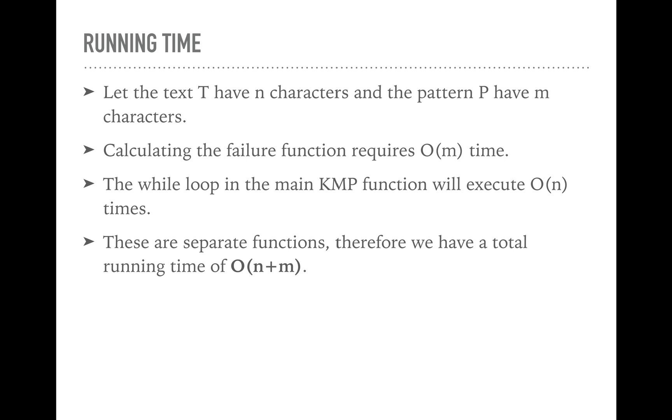The while loop in the main Knuth-Morris-Pratt function, that's our main function is doing the matching and the comparing. That'll execute in order n time. And you can see, if you go back in the code, that'll be clear. So these are two separate functions, calculated them separately. Therefore, the total running time is order n plus m. That's really good. It's way better than brute force. And this worst case is actually optimal because we're just iterating through the whole pattern and the whole text once, can't get any better than that. That's the best you can do. And that's the worst case. So no matter what you do, that's the best.